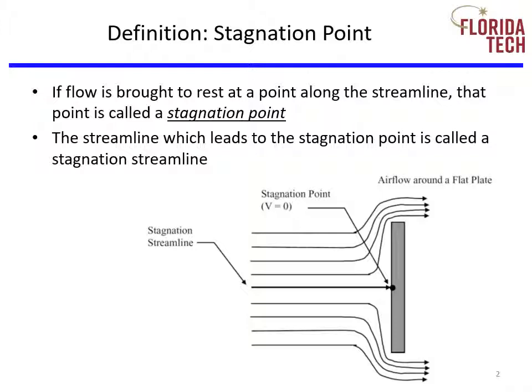If the flow is brought to rest at a point along the streamline, that point is called a stagnation point. The streamline which leads to it is called the stagnation streamline. Wing sections or airfoils typically have a stagnation point on or near their leading edge and their trailing edge.